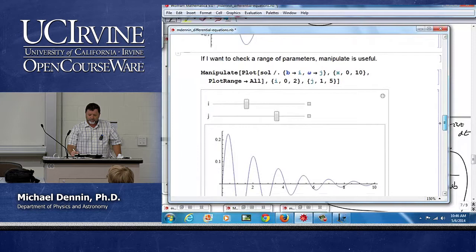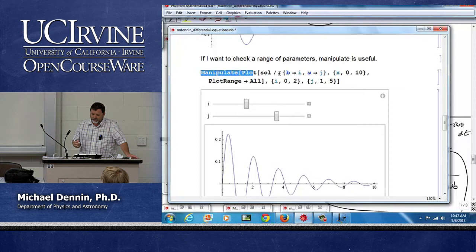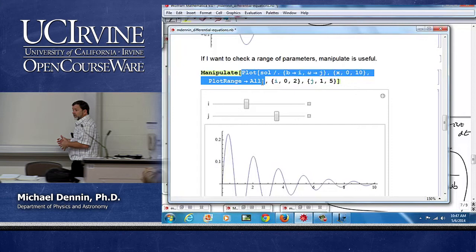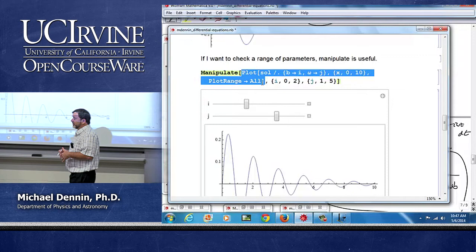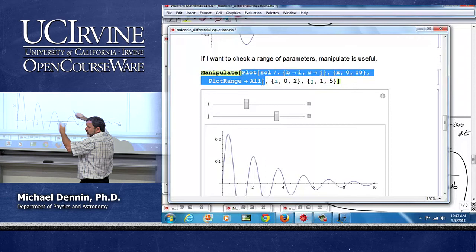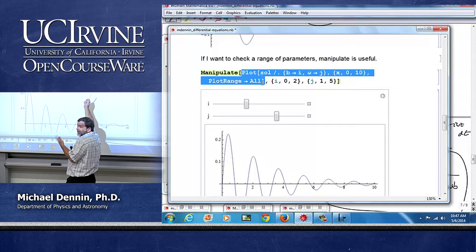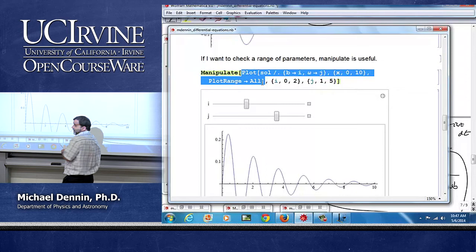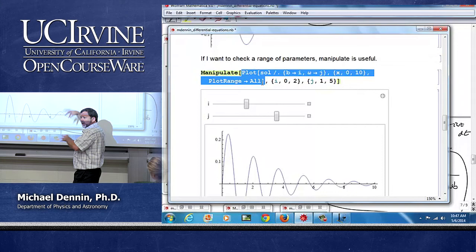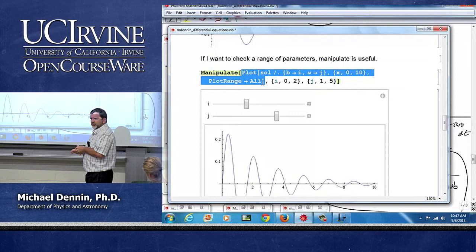Now, one of the things that's really fun is to try a bunch of parameters. And now I could cut and paste that plot multiple times, but it is really useful to learn about Manipulate if you want to check things. Fairly simple syntax. There's the command you want to do. I want to plot something. You can actually put a series of commands with semicolons. You can make it do more than one thing. It's almost like writing a function. So you can put multiple steps in here. But I want to plot. Notice I want to plot the solution with b and omegas replaced with different things.